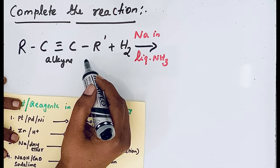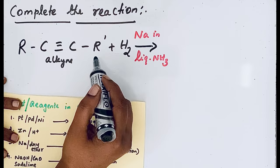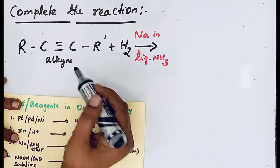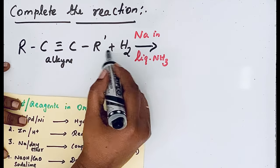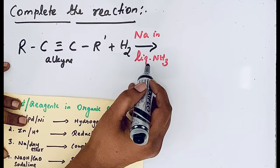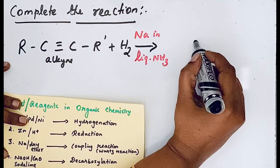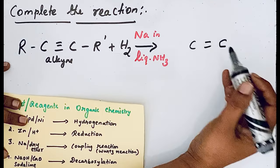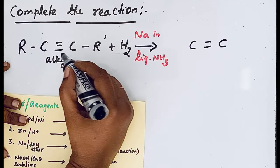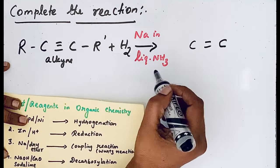This method is very useful to prepare alkene from alkyne. When hydrogen is added in the presence of sodium in liquid ammonia, C double bond C forms and the hydrogen atoms are added.